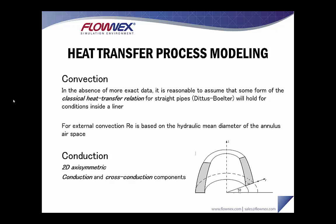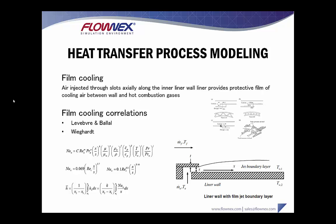With regards to convection, it's typically reasonable to assume that some form of the classical heat transfer relation for straight pipes will hold for conditions inside a liner. For external convection, the Reynolds number is based on the hydraulic mean diameter of the annular air space. Flownex also allows you to create a 2D axisymmetric representation of your conduction surfaces and model conduction and cross-conduction through those surfaces.